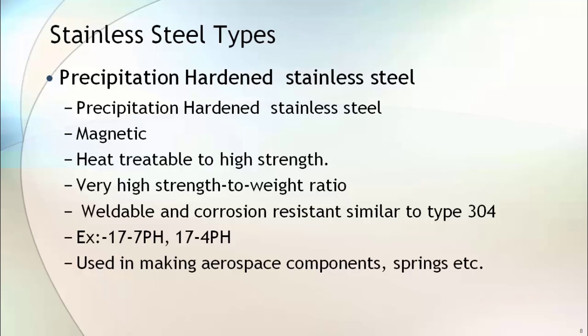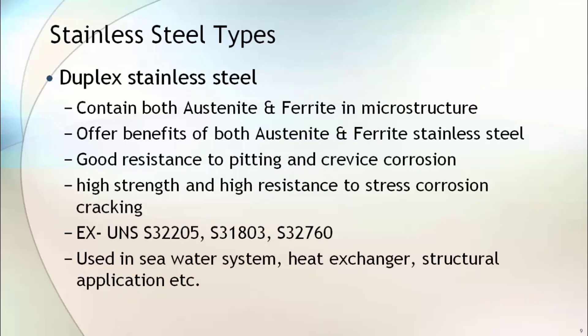17-7 PH and 17-4 PH are examples of precipitation hardened stainless steel. Duplex and superduplex stainless steel contains both austenitic and ferritic microstructure. It offers benefits of both, which is good corrosion resistance with high hardness and resistance to chloride stress corrosion cracking. It also has good resistance to pitting and crevice corrosion. Hence, it is used in seawater systems, heat exchangers, and structural applications. UNS 32205, 31803, and 32760 are examples of duplex and superduplex stainless steel. Here, UNS stands for Universal Numbering System.